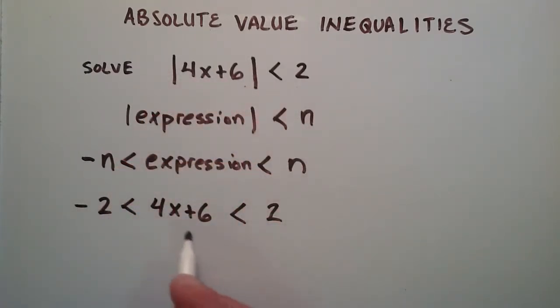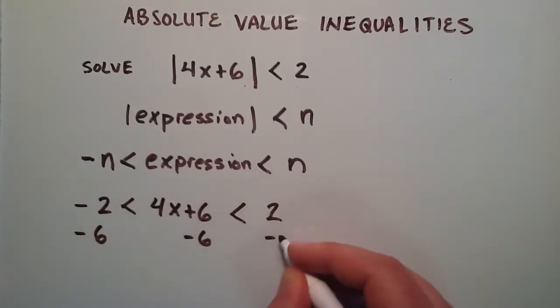Now we're going to treat this like a normal algebra problem and think of these less than signs as equal signs. What we want to do is get x by itself. The first step is to subtract 6 from all three of these.